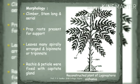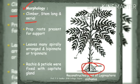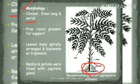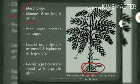Regarding the morphology of Lyginopteris, these are climber plants with long, aerial, and slender cylindrical stems. Prop roots are present for support of the plant. These are mechanical modifications of roots providing mechanical strength, needed because the plant has a slender and tender stem. These prop roots are also seen in angiosperms in monocot families like maize.